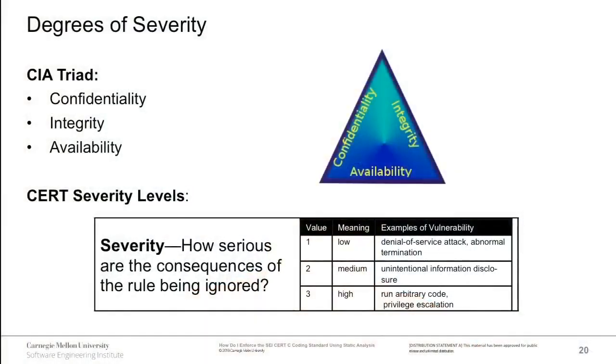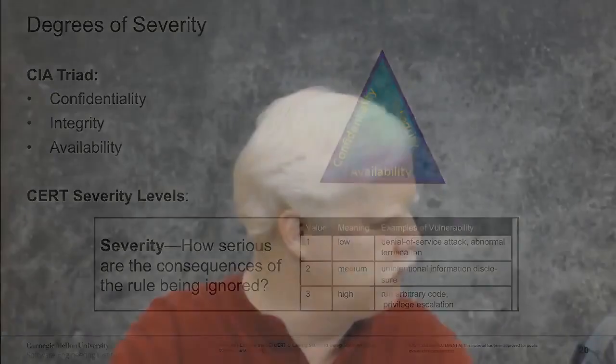This maps closely to the CIA triad — Confidentiality, Integrity, and Availability. Availability corresponds to our low severity level, where crashing or hanging a program makes it unavailable. Integrity and confidentiality both correspond to medium severity: leaking sensitive information costs you confidentiality; modifying information costs you integrity. The CIA triad doesn't have something analogous to remote code execution, but high severity basically costs you all three — confidentiality, integrity, and availability.